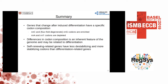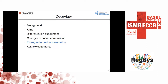In conclusion, we have shown that genes that changed after induced differentiation have a specific codon composition. They are enriched for NNC and fourfold degenerate NNG codons and they are depleted for NNA and NNT codons. This seems to be an inherent feature of the genome that might be related to differentiation. We have also shown that the self-renewing related genes have fewer destabilising and more stabilising codons than the differentiation-related genes. So far this could have been done with only the RNA-seq data, so now I'm going to tell you what we could do on codon translation using the ribosome profiling data specifically.